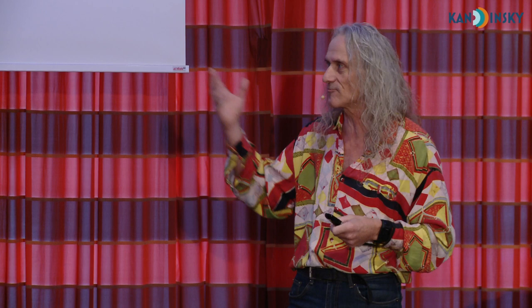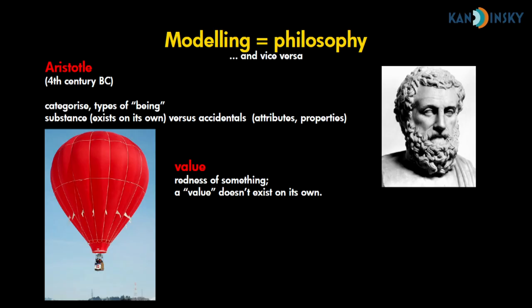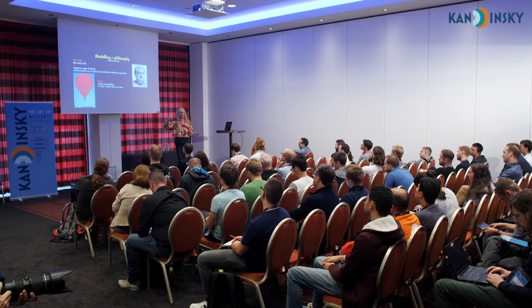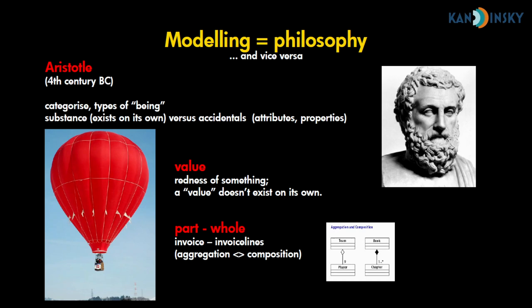Aristotle made a difference between things that can exist on their own and things that can only be attributes or properties of something. For instance, if you have a red balloon, the balloon can exist on its own, but the redness of the balloon cannot exist without something that is red. So it is a different kind of being. You don't really have two different entities — the balloon and its redness. The same when you have an invoice and invoice lines: you don't say 'I'll send you the invoice and the invoice lines too.' They are not two different things; they belong together.